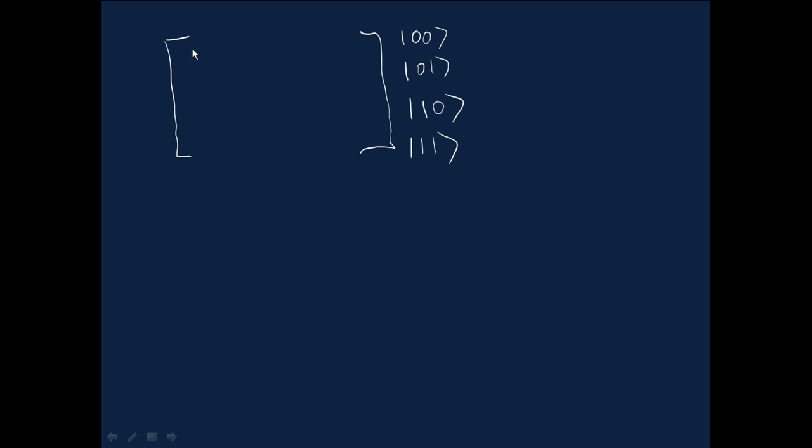So the action on the |00⟩ state is just to leave it alone. So it comes back as a |00⟩ state. The action on the |01⟩ state, the second column, is also to leave it alone because the control qubit is not set. But when we have the |10⟩ state here in the third column, the second qubit, the target qubit, is in fact flipped and we're left with the |11⟩ state.